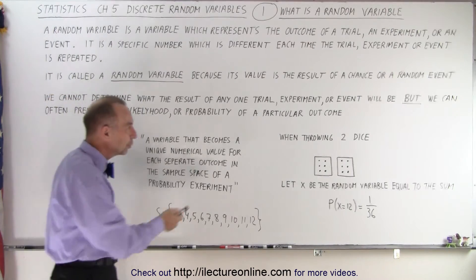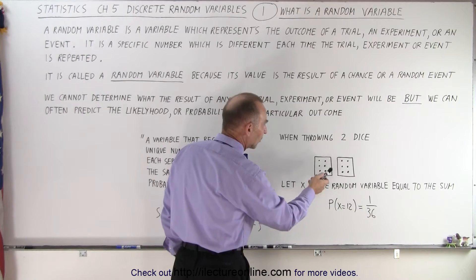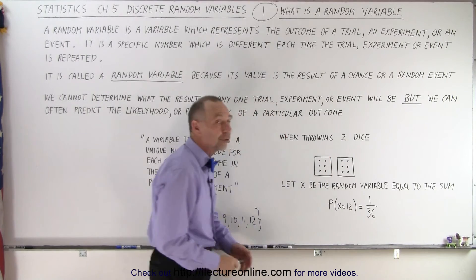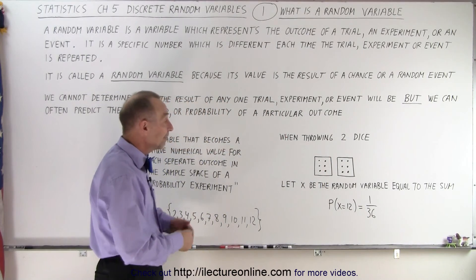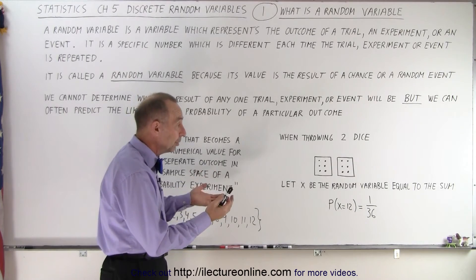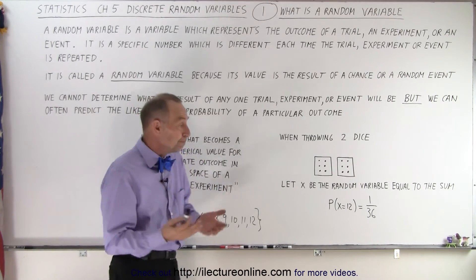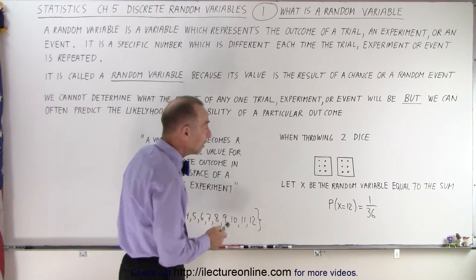So when we throw two dice, let's say we get six and six on each of the two dice. Well, if x is the random variable that equals the sum of what's on the dice, then in this case